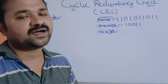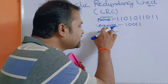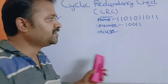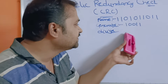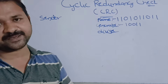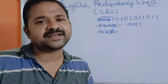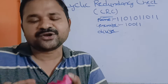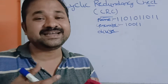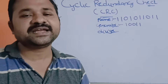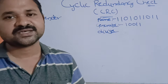At the receiver side, the receiver performs a division operation using the same generator and the new frame — which is the original message with the remainder appended. If the receiver gets a remainder of 0, then the receiver knows it is the correct message and there is no problem. If the receiver does not get a remainder of 0, it sends an acknowledgement to the sender asking to retransmit the message.